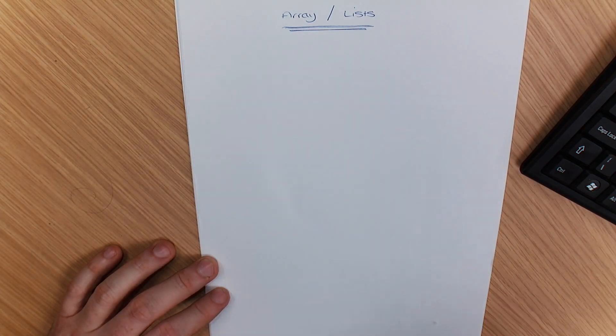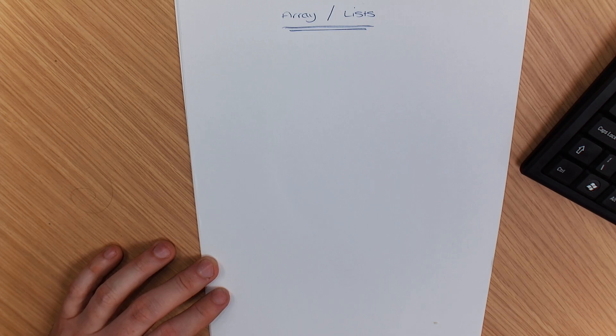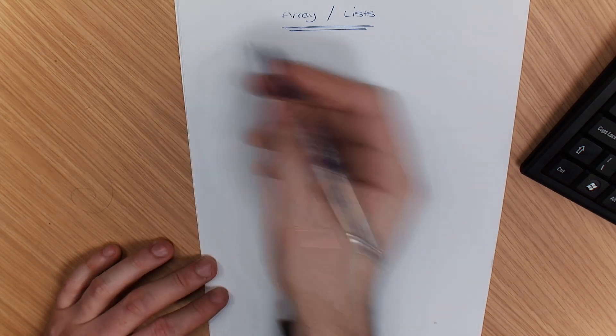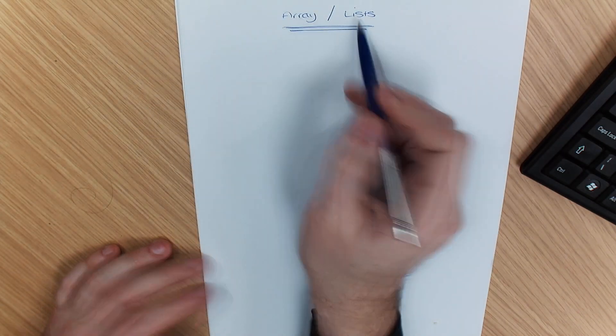Now in a previous lesson with you, I did noughts and crosses if you remember, but if we've got to put a list of names, we need to know the difference between arrays and lists.